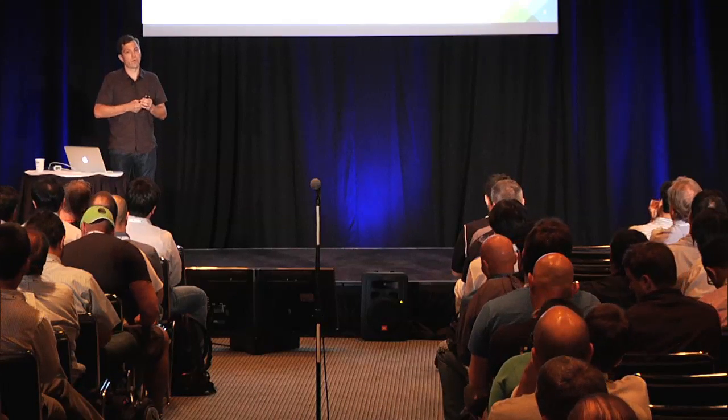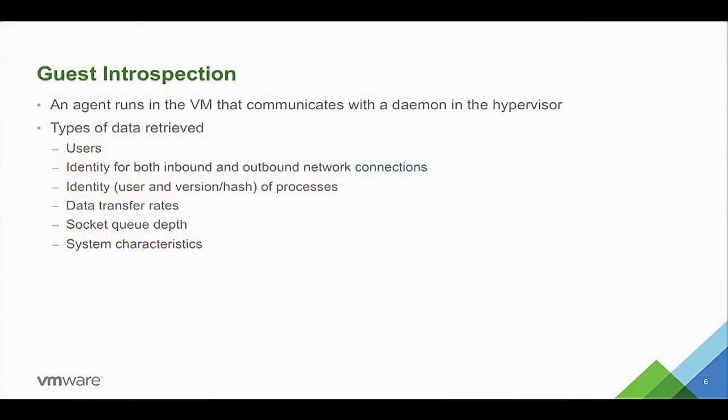A newer area we've started looking at is guest introspection. The idea is that you have an agent running in the VM that communicates with a daemon in the hypervisor, which can query the guest agent to find out what's going on inside. There is some risk in running agents in the guest, but this agent's code is relatively small — it's not doing enforcement, just returning information. The pages can be marked as read-only since they don't need to maintain state, and the hypervisor will fault if anyone tries to modify those pages.